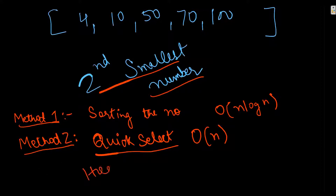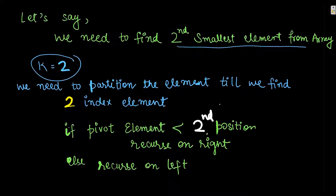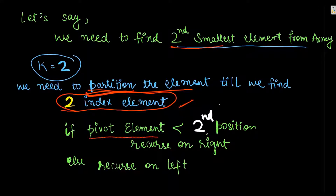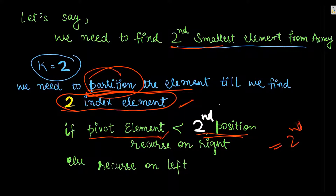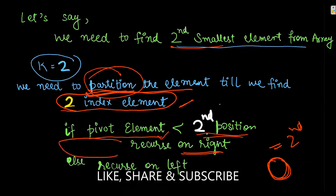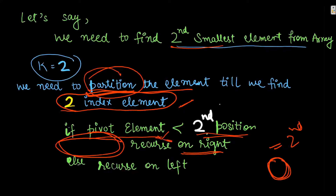We'll use a partition approach where we partition the elements and find our target index element. We get a pivot element through this partition, then compare the pivot's position with our target position. If it equals the target position, that element is our answer. Otherwise, we recurse on the right and discard the left, or recurse on the left if needed.